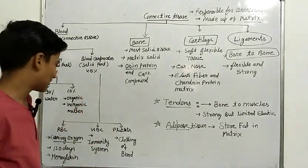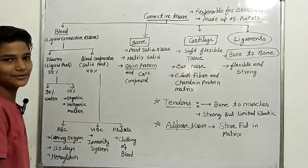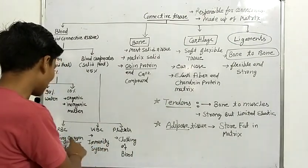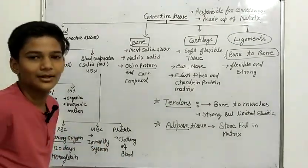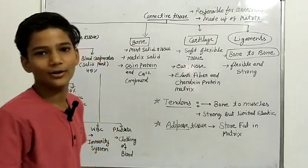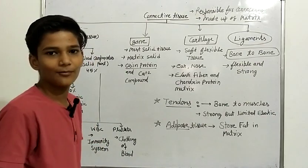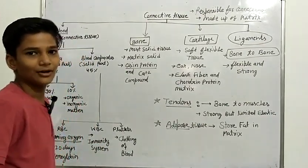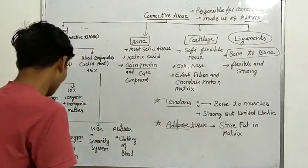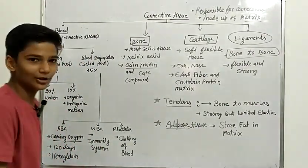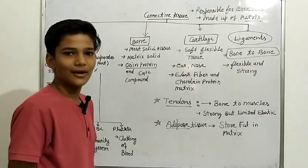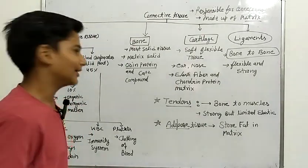Blood corpuscles have three types. First, RBC. The work of RBC is to carry oxygen in our body and the life cycle of RBC is 120 days. It also contains hemoglobin, by which our blood gets its red color.